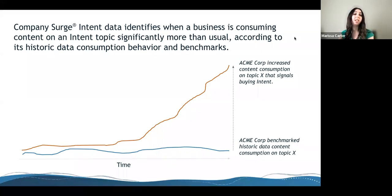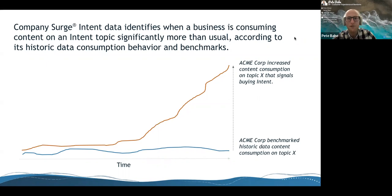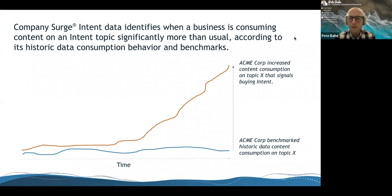My first question for you Pete: can you explain what a health score is and why it's important for organizations to pay attention to? When most people think about intent data, they think about how they can leverage it for lead prioritization — determining which customers or prospects are in market for a product or service at a particular time. We're turning that on its head a little bit, using some of the same fundamentals to look for research signals that somebody is in market for another solution. In this webinar, we're going to cover how intent data powers a health score.